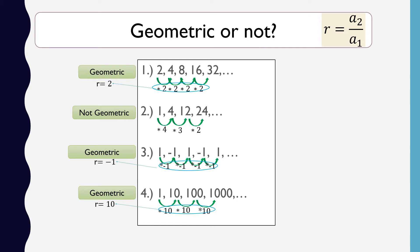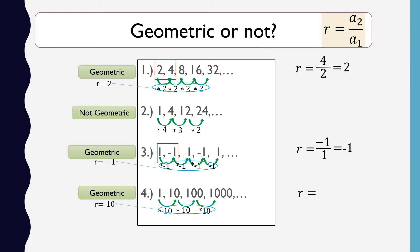For item number 1, the second term is 4 divided by the first term 2, giving R equal to 2. For the third item, the second term is negative 1 divided by the first term 1, so R is negative 1. For number 4, the second term is 10 divided by the first term 1, so R is 10. You get the same answers for the geometric common ratios.